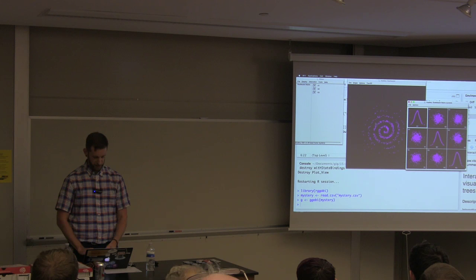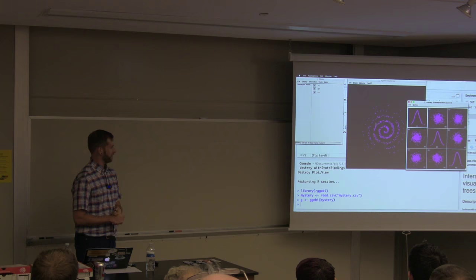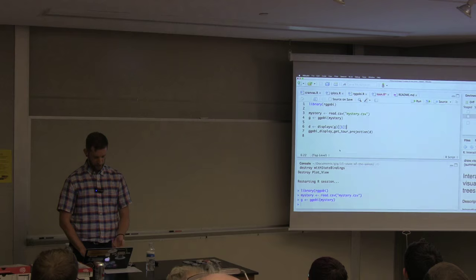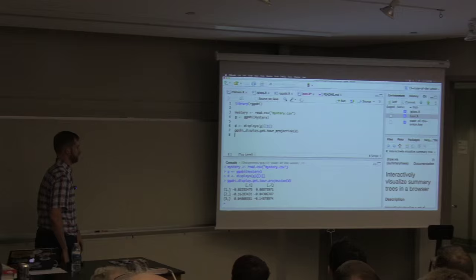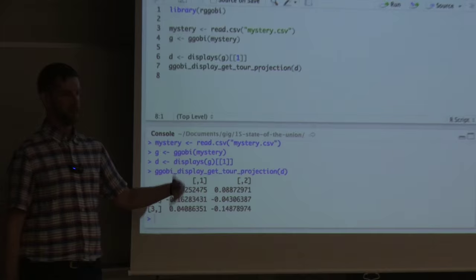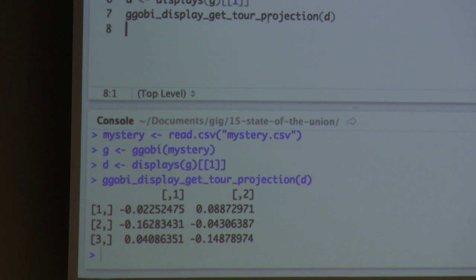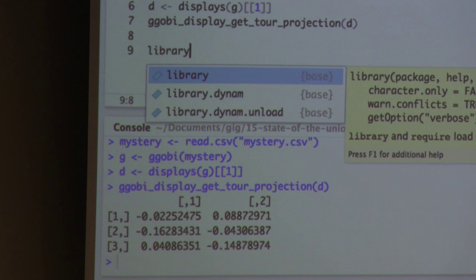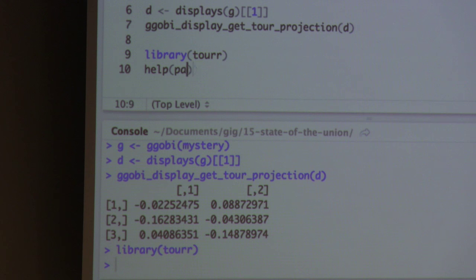So ggplot2 does—sorry, GGobi does lots of other things, but I'm going to focus on the grand tour because this is the one thing that GGobi does that few other packages do. Now the cool thing about this is we can interact with this from R. We could say, well, what is the projection that gives us that striking view? Well, we can run some R code and we get that matrix, we get the projection matrix, that if we multiply our data by this matrix, we get that 2D projection which really shows us that striking pattern. Now the tour stuff did actually turn into an R package called tour, and I just want to show you the tour package is cool because it takes that idea and generalizes it, generalizes it to somewhat slightly ridiculous extents.